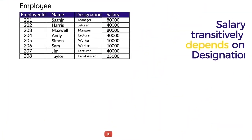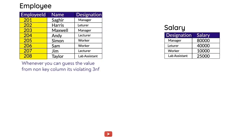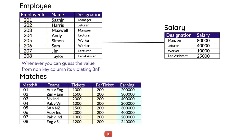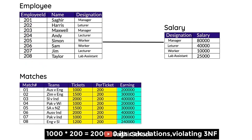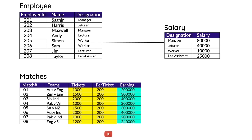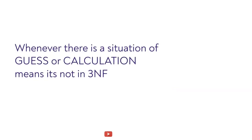Another Third Normal Form example: if someone's designation is Manager, the salary will be 80,000 — that's transitive dependency between non-key columns. Transitive dependency also occurs when there is a calculation in the table. For example, Earnings depends on Total Ticket Sales multiplied by Ticket Price. If 1,000 tickets are sold at 200 each, earnings are 200,000. Any derivable calculation in a table is also considered transitive dependency.